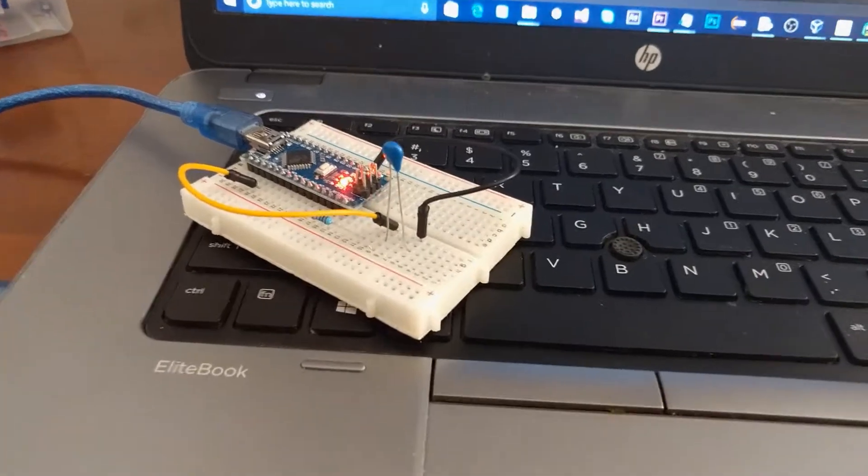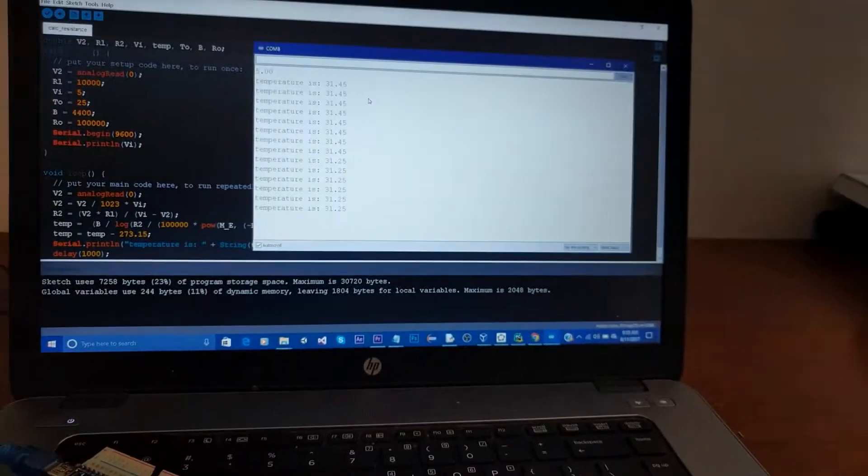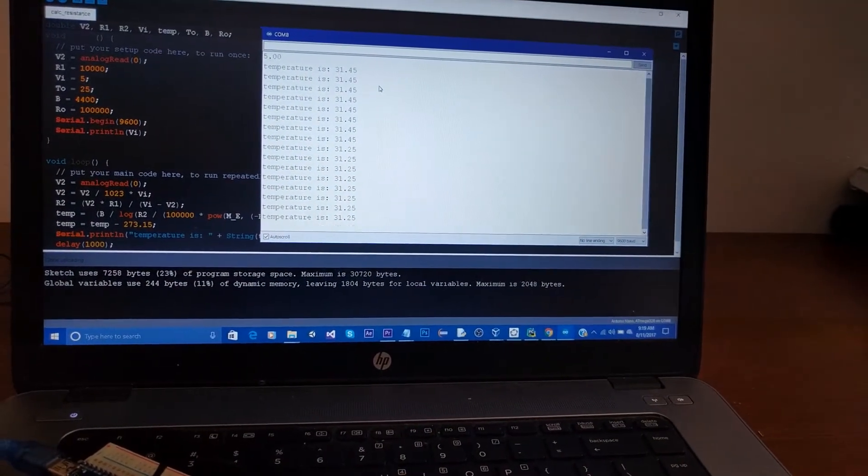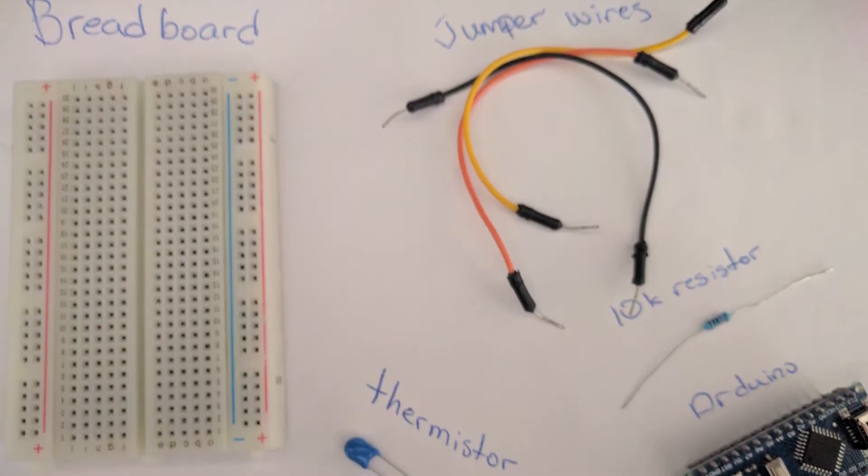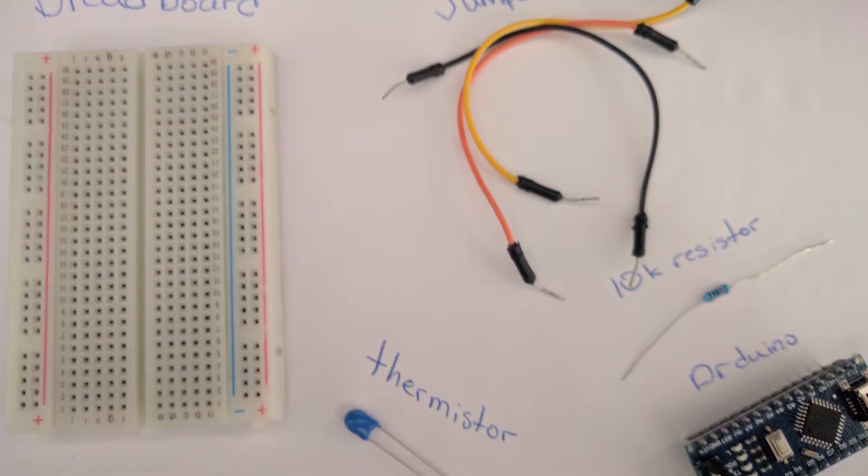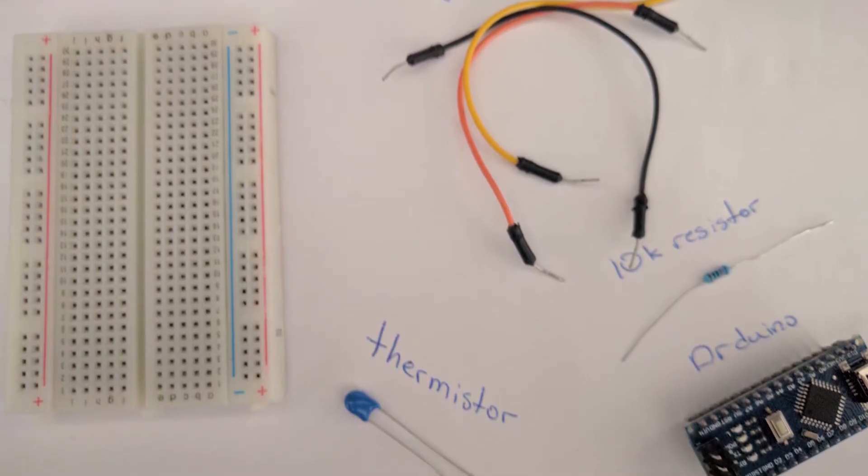This is part one of the tutorial and on this video we're going to focus on getting the temperature to the screen monitor. To follow along with this tutorial you will need a breadboard, jumper wires, a resistor.